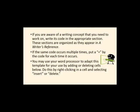If you're aware of a writing concept that you need to work on, write its code in the appropriate section. These sections are organized as they appear in A Writer's Reference. And if the same code occurs multiple times, it would be a good idea to put a plus by the code for each time it occurs, and that way you have a visual way of seeing which codes are most significant for you. You can also use your word processor to adapt the template for your own use by adding or deleting cells as appropriate. Do this by right-clicking in a cell and selecting insert or delete.